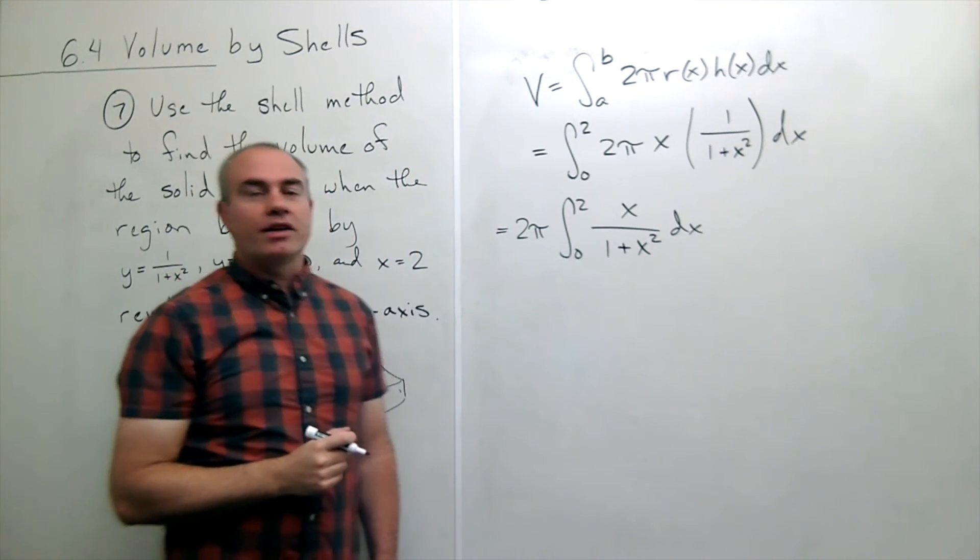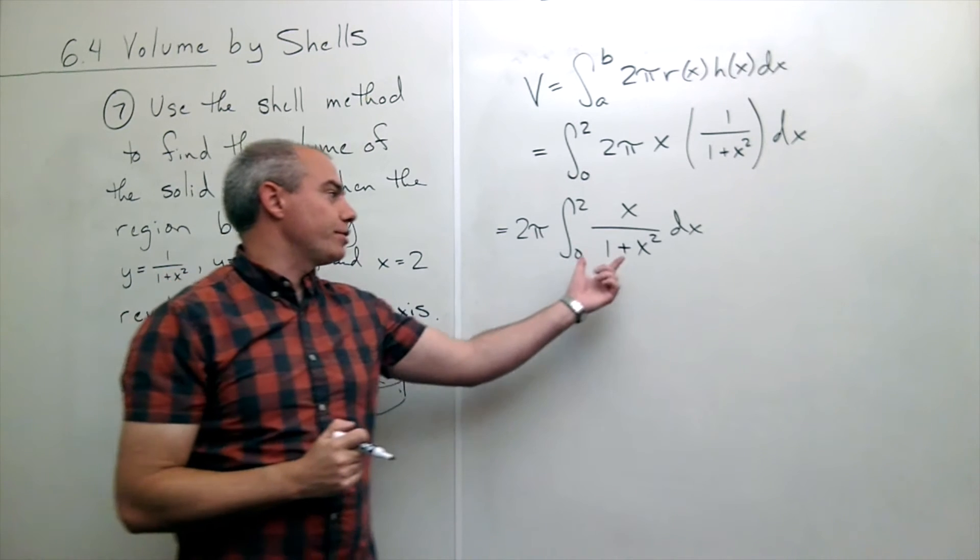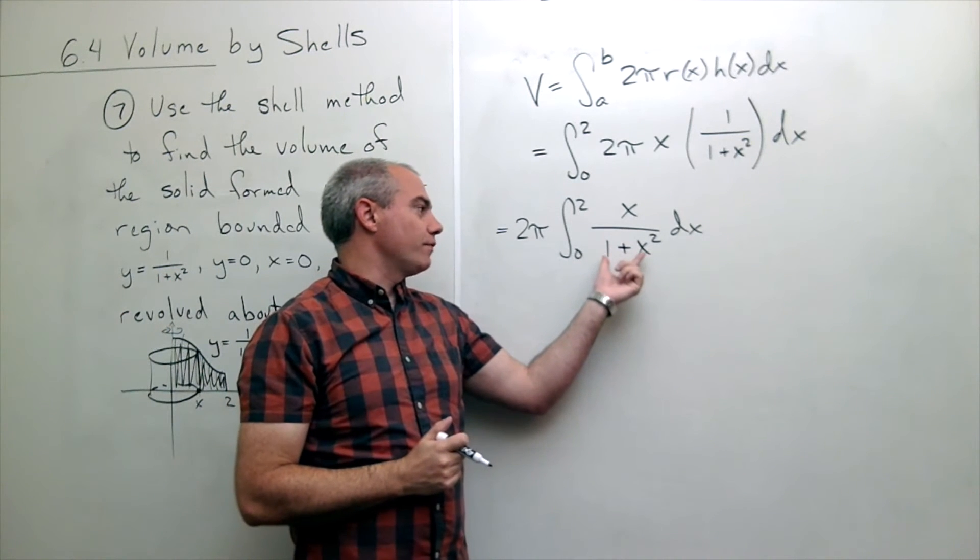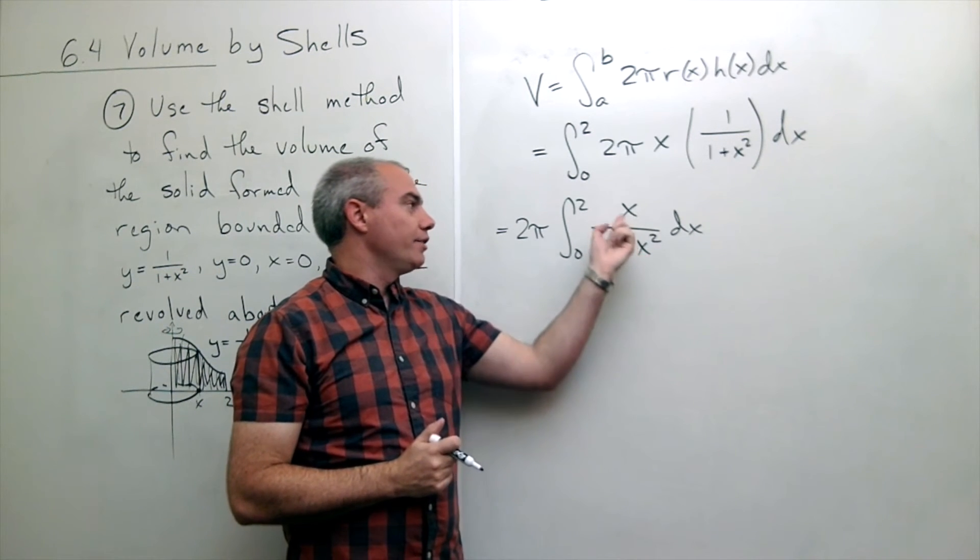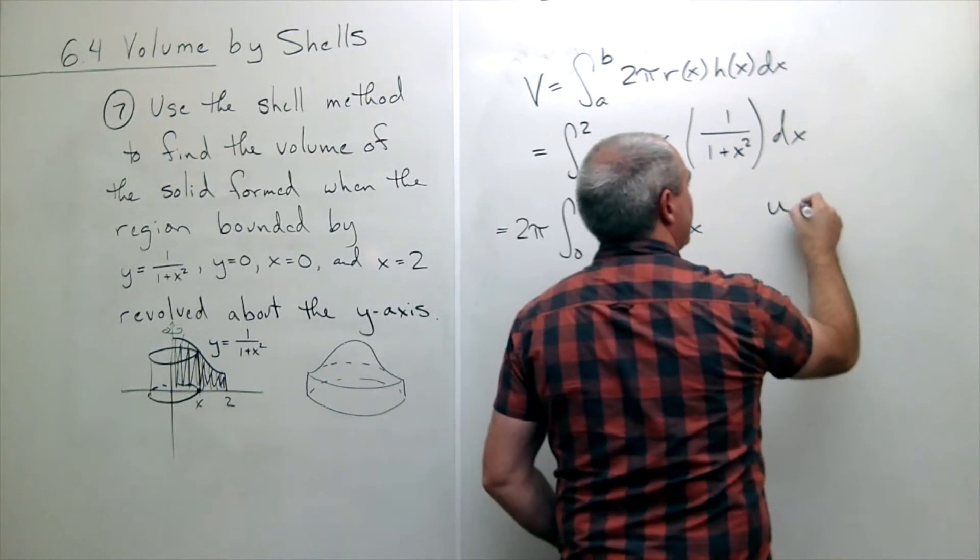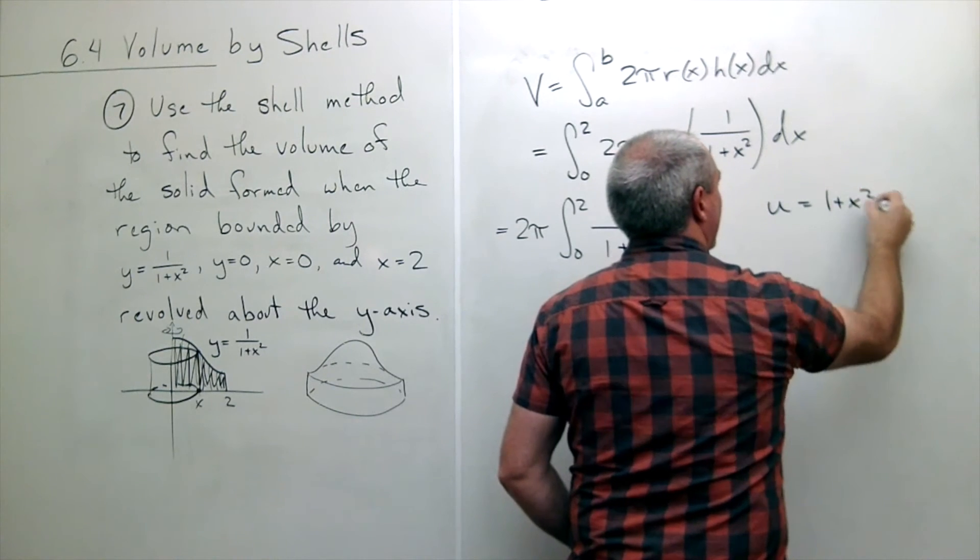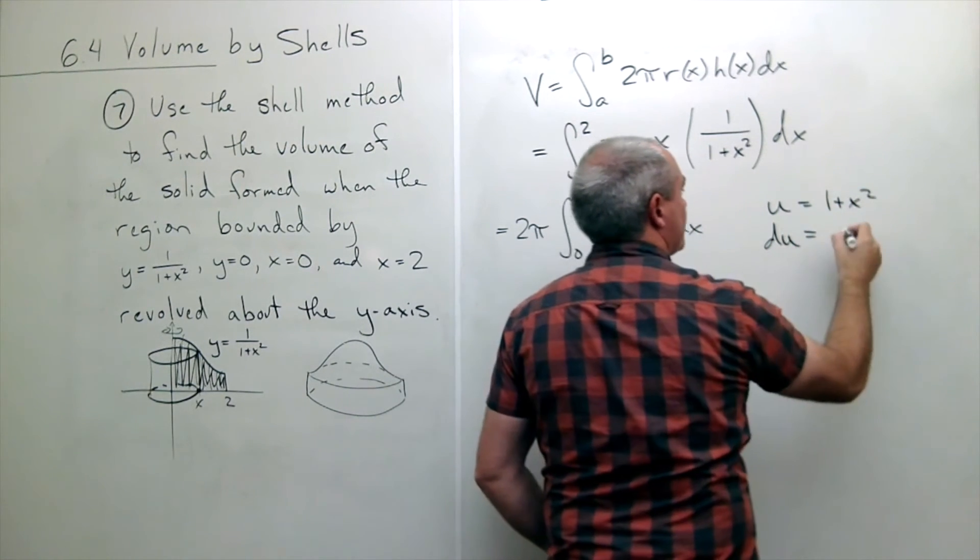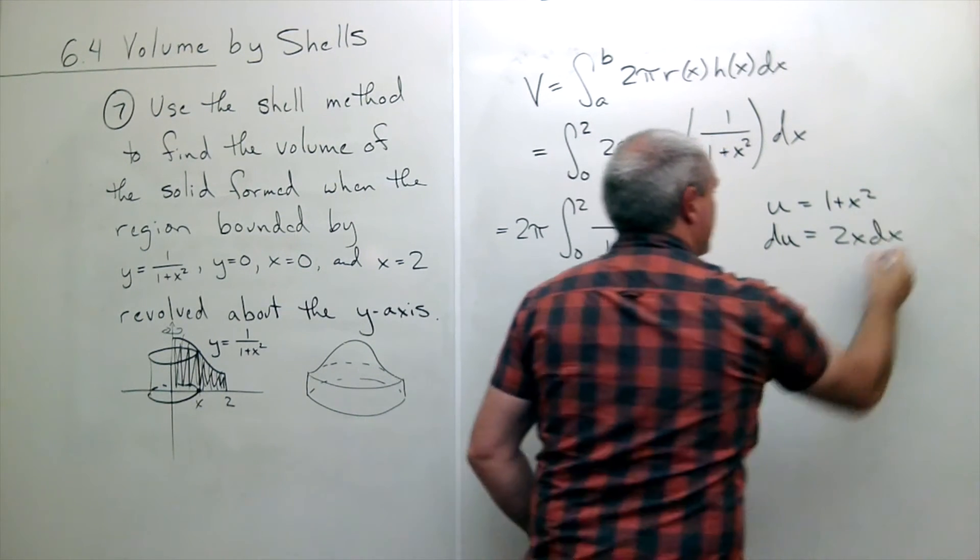But this is a fairly simple u substitution problem. I can substitute for 1 plus x squared. The derivative is x. So let's do that real quick. I'll let u be 1 plus x squared. The derivative is 2x dx.